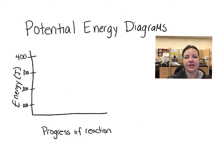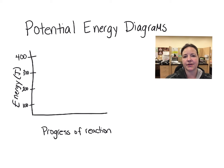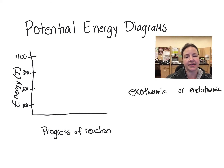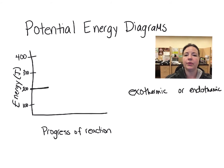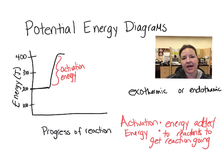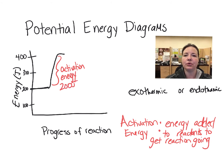When we look at potential energy diagrams, we want to be able to read them as being exothermic or endothermic. We want to be able to read the energy of the reactants, which in this case is going to be 200. The activation energy is how much energy we need to add to those reactants to get them activated — at that point we call it the activated complex.